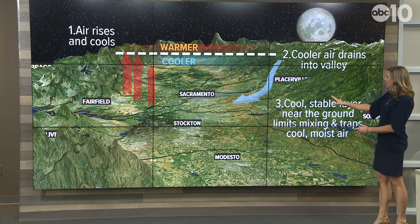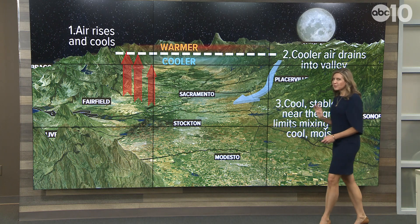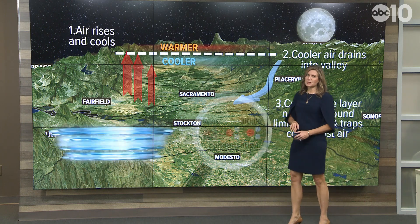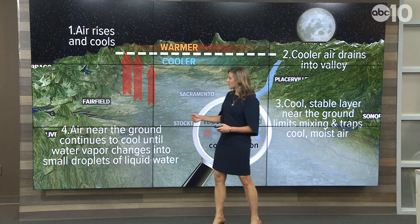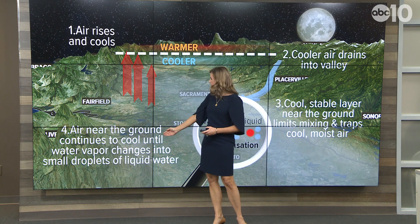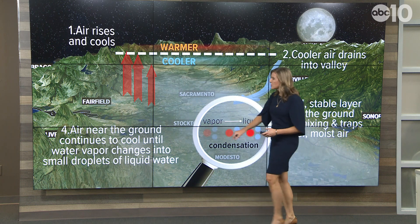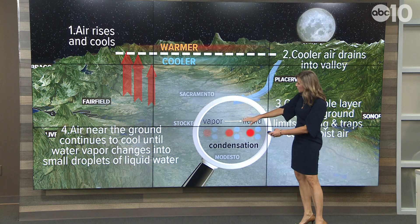So our next step is if we've got that cool, stable layer near the ground, that's going to limit our mixing and trap that cool, moist air. And the final step to the fog formation, when we really start to see the hazardous conditions forming, is the air near the ground continues to cool until water vapor changes into small droplets of liquid water. You can see the transition here going from vapor to liquid — that's called condensation.